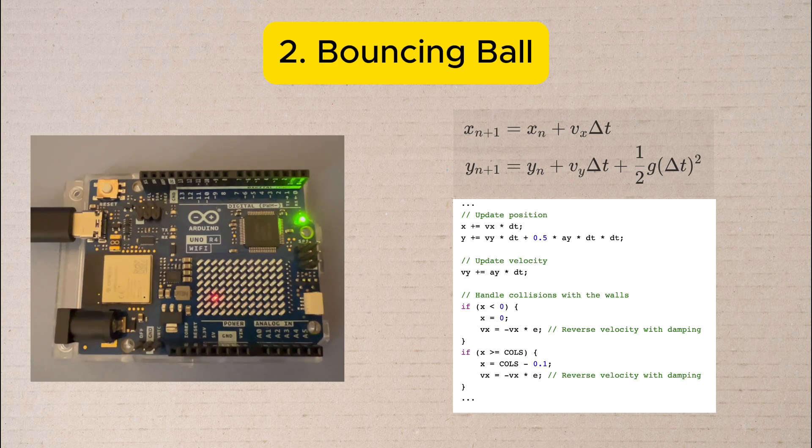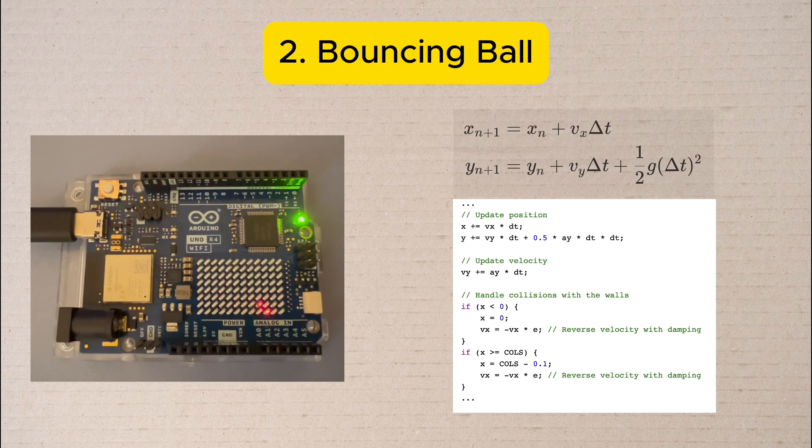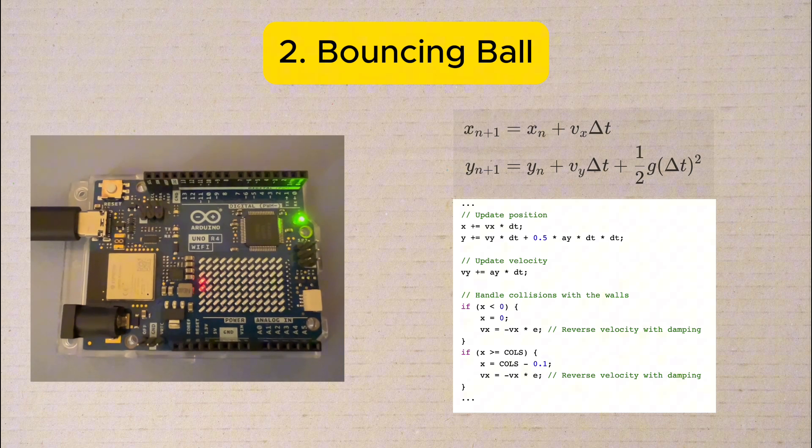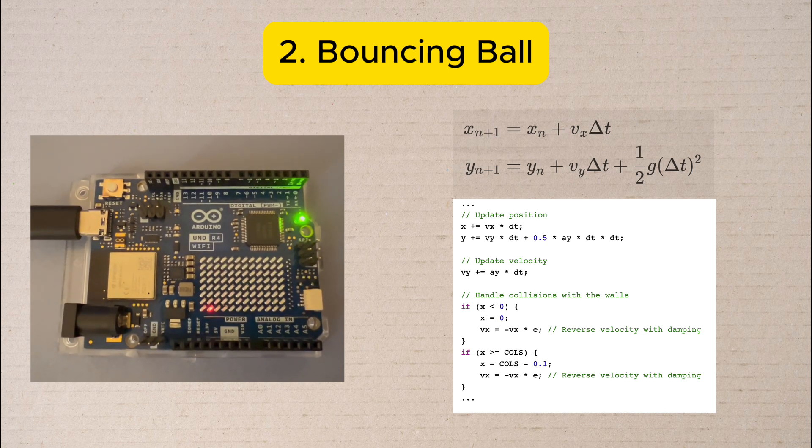Then in each frame of the animation we calculate the ball's new position using physics equations that account for gravity. We also check for collisions with the matrix boundaries.